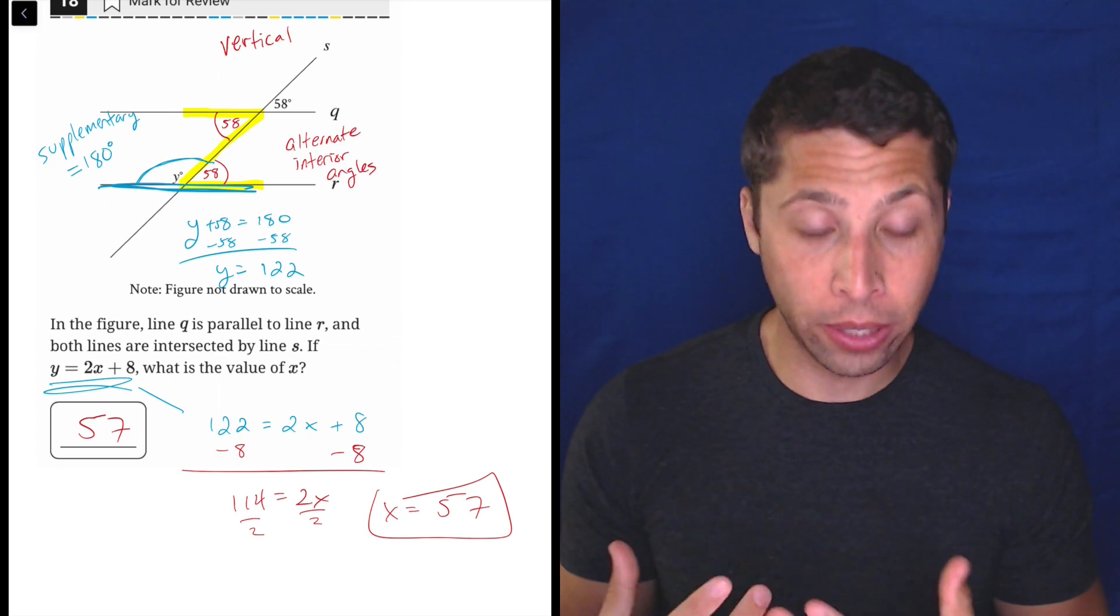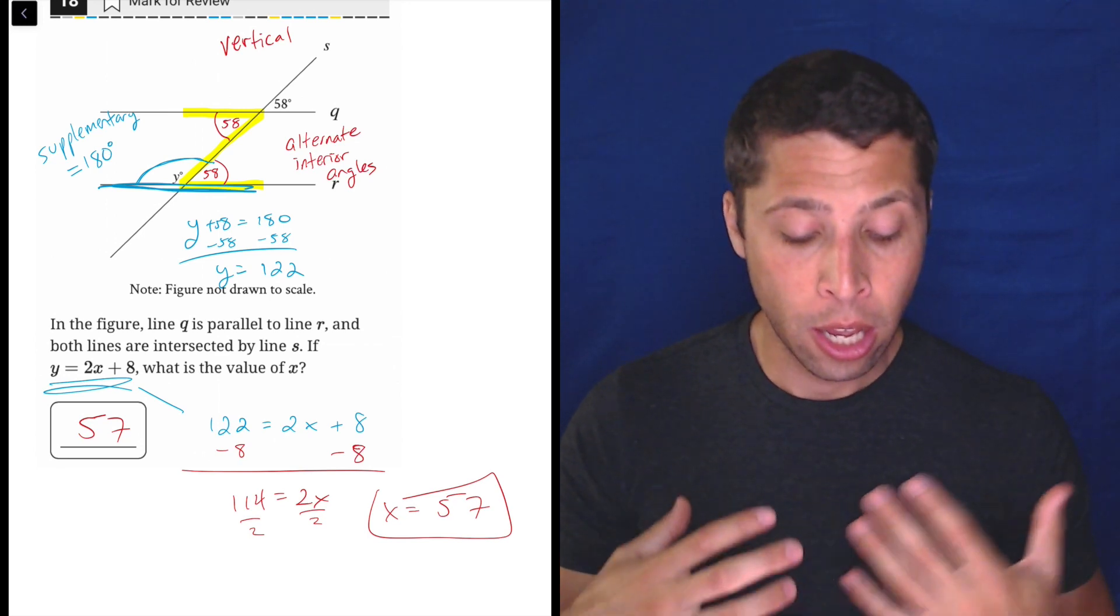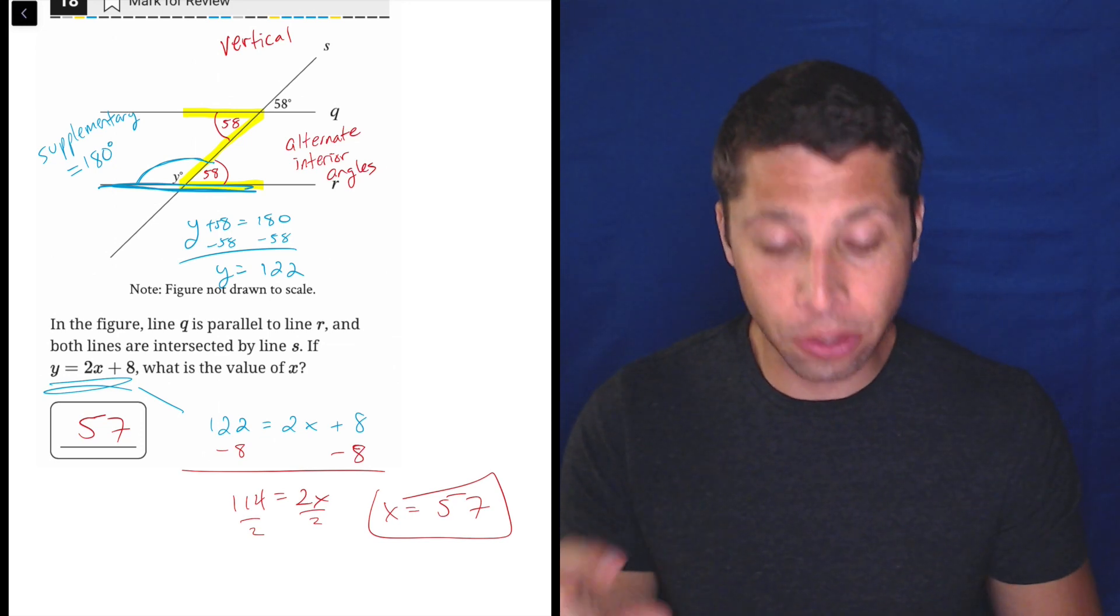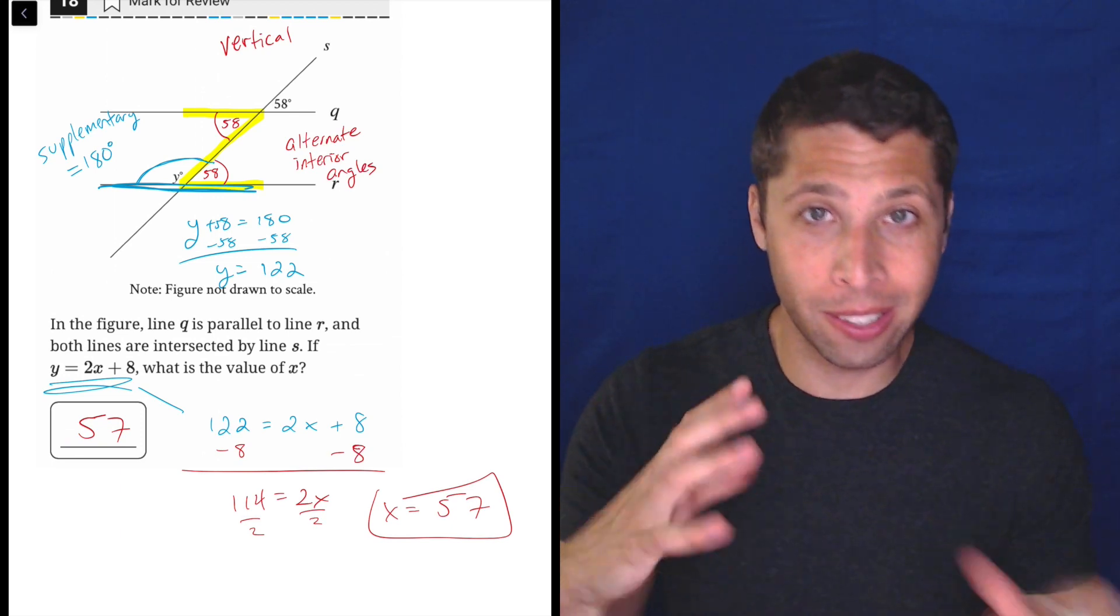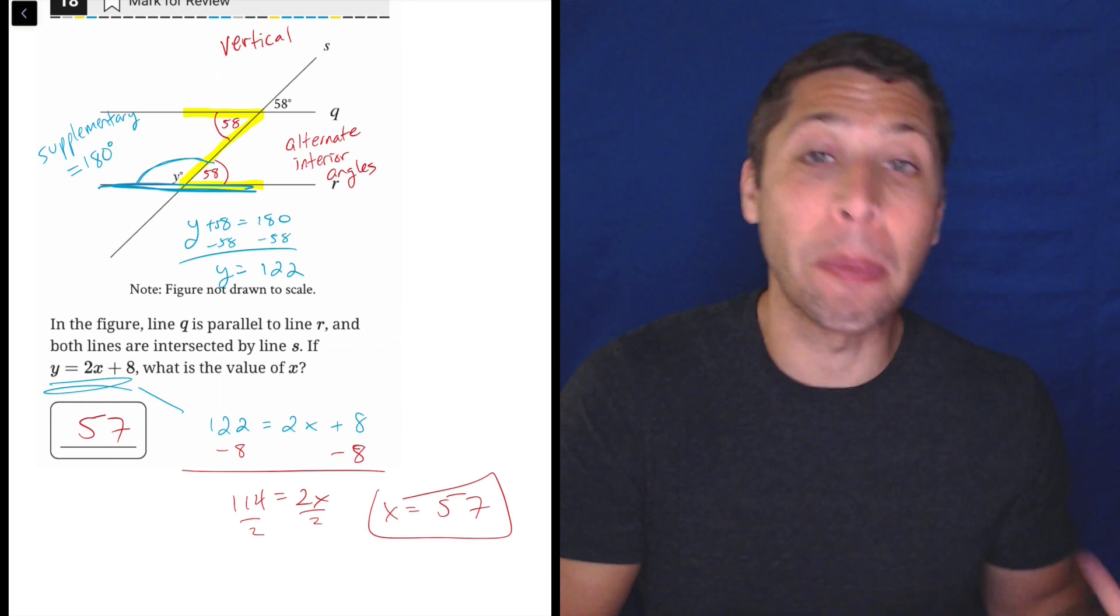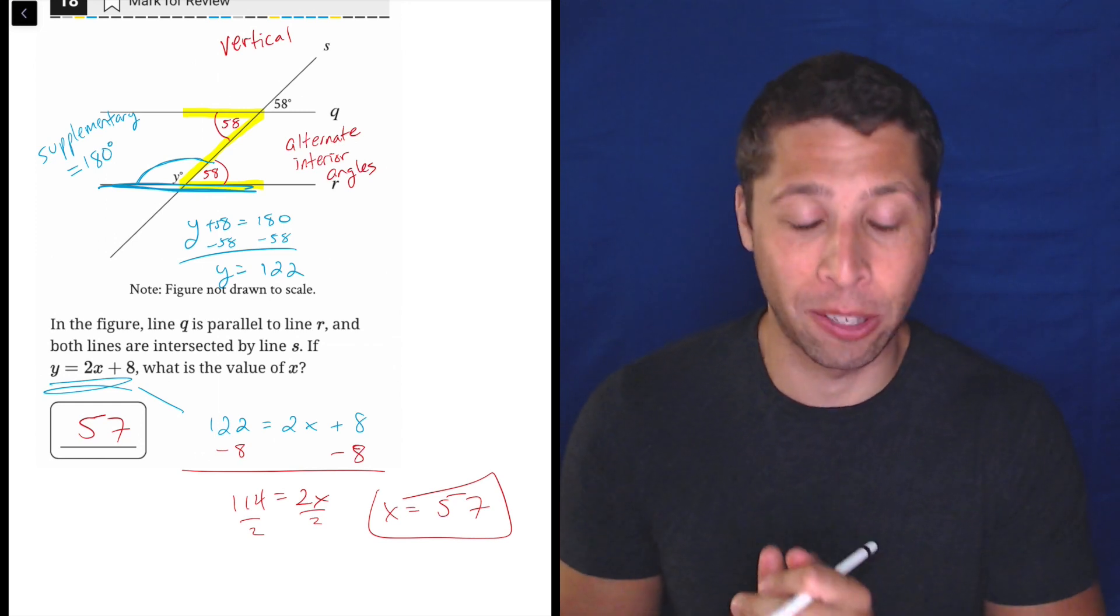And so hopefully, even though it says it's not drawn to scale, you can still see which angles are going to be the same, right? All of those little angles there are the 58s. So you can put all those on there and then all the big angles, those are going to be the ones that are supplementary to 58. So 180 minus 58.